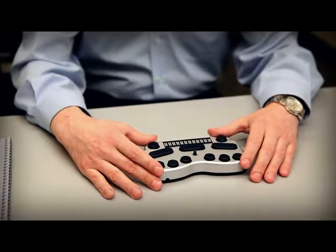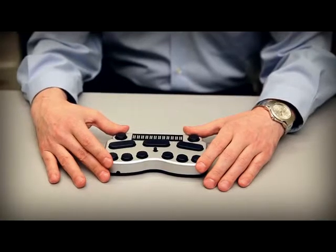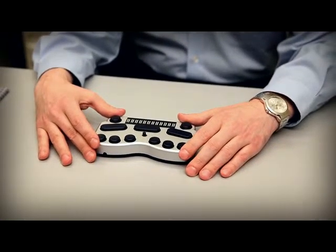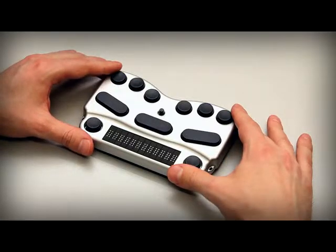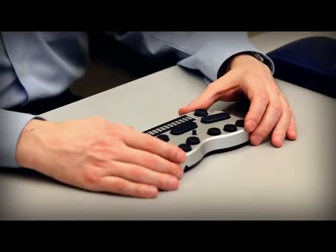The next beep tells you the battery level. Three beeps for fully charged, two beeps for 50% charge, one beep for low battery. The final sound is a chirp to confirm that Bluetooth is active. And that's the Braille Pen 12.